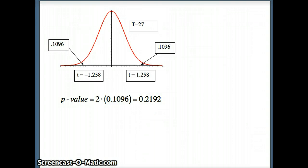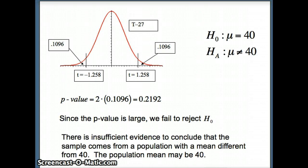Since the p-value is large, we fail to reject H₀. It means there is insufficient evidence to conclude that our sample comes from a population with a mean different from 40. The population mean may be 40. We're not saying the population mean is 40, we're just retaining it as a possibility. That concludes this presentation.